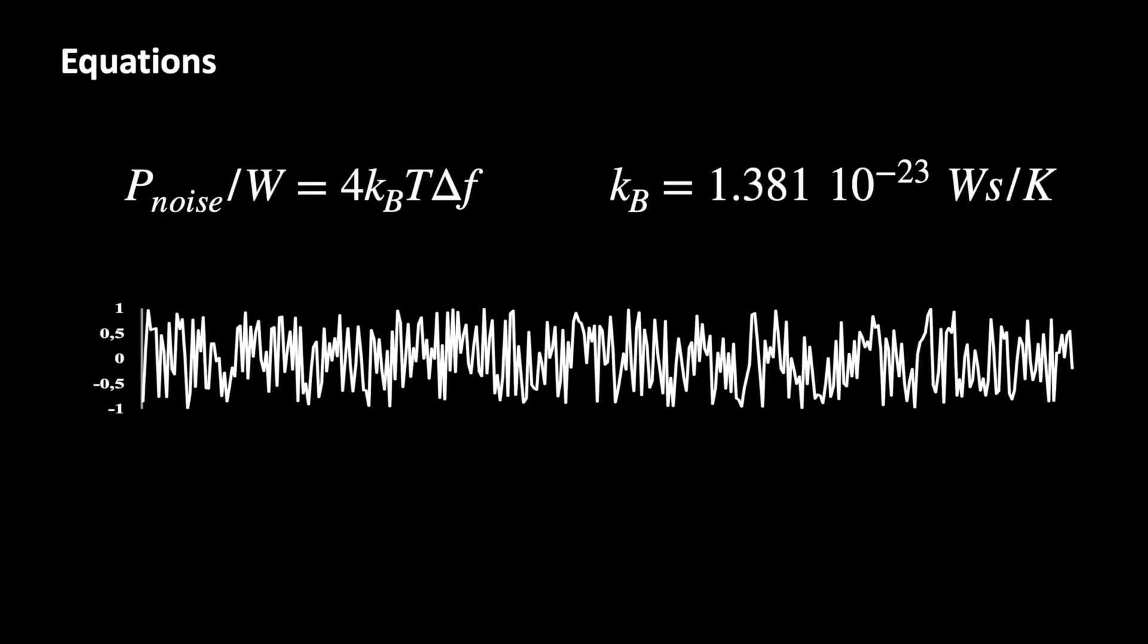This is the formula for calculating the receiver's inherent noise. Amazingly easy, isn't it? The equation contains the so-called Boltzmann constant, the absolute temperature in degrees Kelvin and the frequency bandwidths. We will calculate an example in a minute.